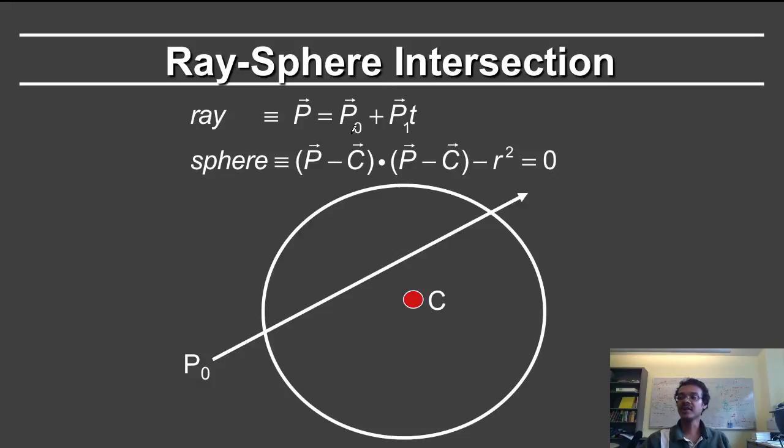The ray is defined like this. You have an origin, p0, and you have a direction, p1. T is a parameter along the ray that starts from 0 and is positive, corresponds to the distance along the ray.